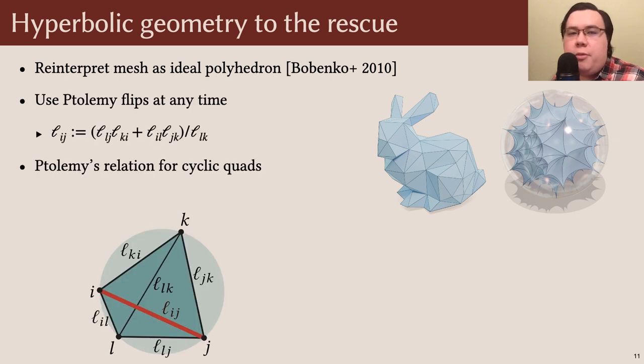If the two triangles share a common circumcircle, then this new length really is the Euclidean length of edge ij. However, in general, this new length will differ from the result of a standard edge flip, and we can even apply the Ptolemy formula in cases where the triangle inequality doesn't hold, and the Euclidean edge flip is undefined.